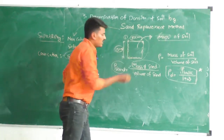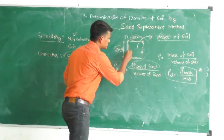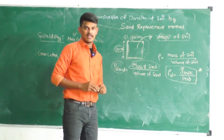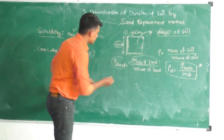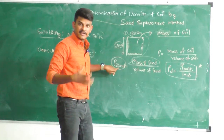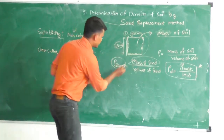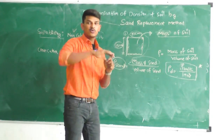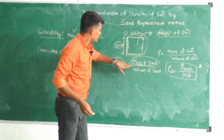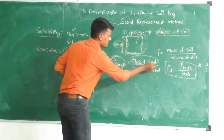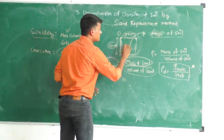While digging, the hole is not exactly uniform — it may have undulations, so the volume is not properly calibrated. To find the exact volume occupied by the soil mass, we use sand as a calibrating material. First, we determine the density of the sand in the laboratory. Then in the field, we pour sand into the excavated volume and note the mass of sand used.